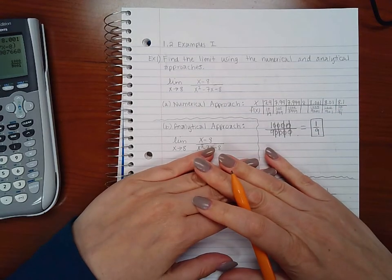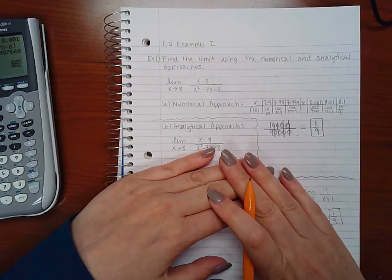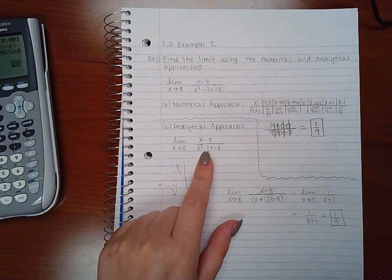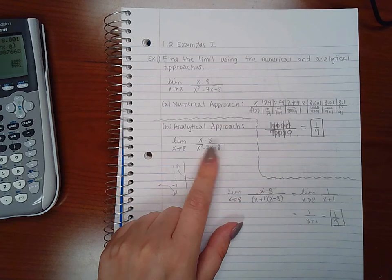Now that's the numerical approach. I get one ninth using the numerical approach. If I use the analytical approach, that means that I have to use algebra.